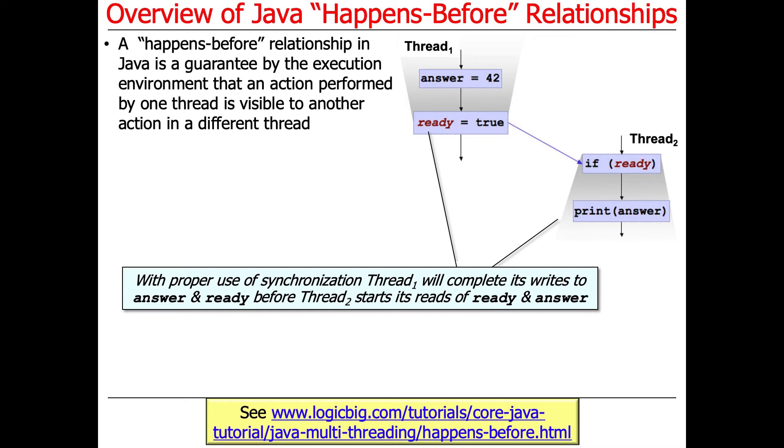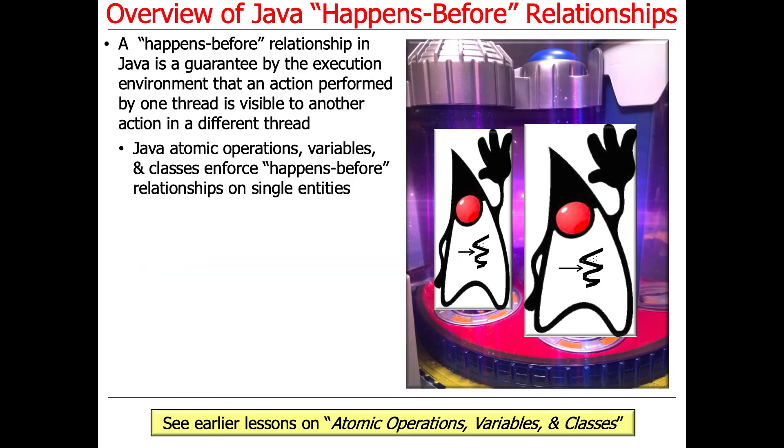You have thread one come along and set answer to 42 and then set ready to true. And if you've got everything properly synchronized, then if this other thread comes along and discovers that ready is true, it will get the answer 42. So if things are properly synchronized, if you have proper happens-before relationships, that's what you'll get. If you don't have things synchronized, then it could very well be the case that this thread finds ready being true, but the answer would be something else than 42. If this is properly synchronized, we'll get the right results. Otherwise, we could get the wrong results. And that's why these synchronizers are so important, because they ensure you get these happens-before relationships consistent and visible in the right place at the right time, in the right order.